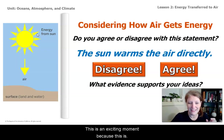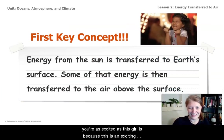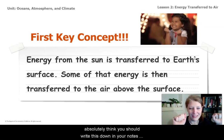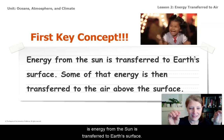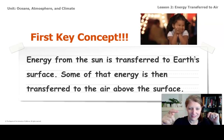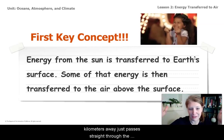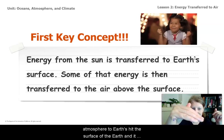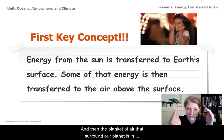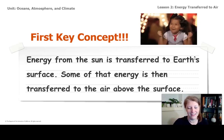This is an exciting moment because this is our very first key concept for the unit. The first key concept — and you should absolutely write this down in your notes — is: energy from the sun is transferred to Earth's surface, and some of that energy is then transferred to the air above the surface. Energy from our star, 150 million kilometers away, passes straight through the atmosphere, hits the surface of the Earth, and starts to warm it. Then the blanket of air around our planet, which is in direct contact with the Earth, receives energy as the Earth gets warmer and warmer. And that is so cool.